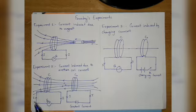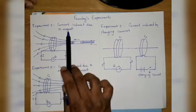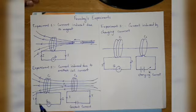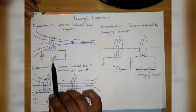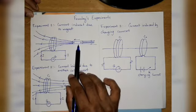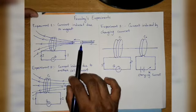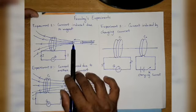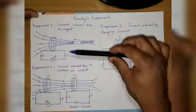Experiment 1 is current induced due to a magnet. Here we have a coil which is connected with a galvanometer and a bar magnet. As we can see, the north end is facing towards the coil. Suppose if we...